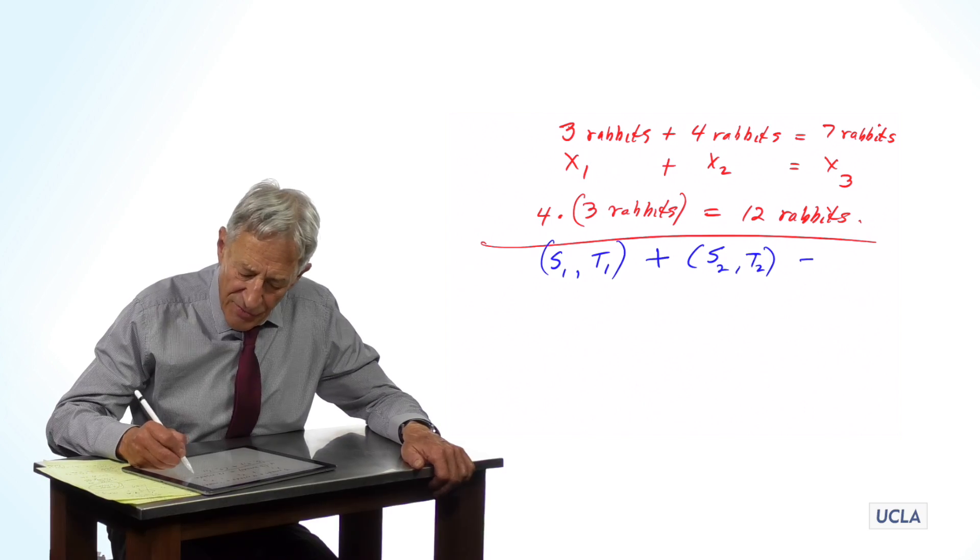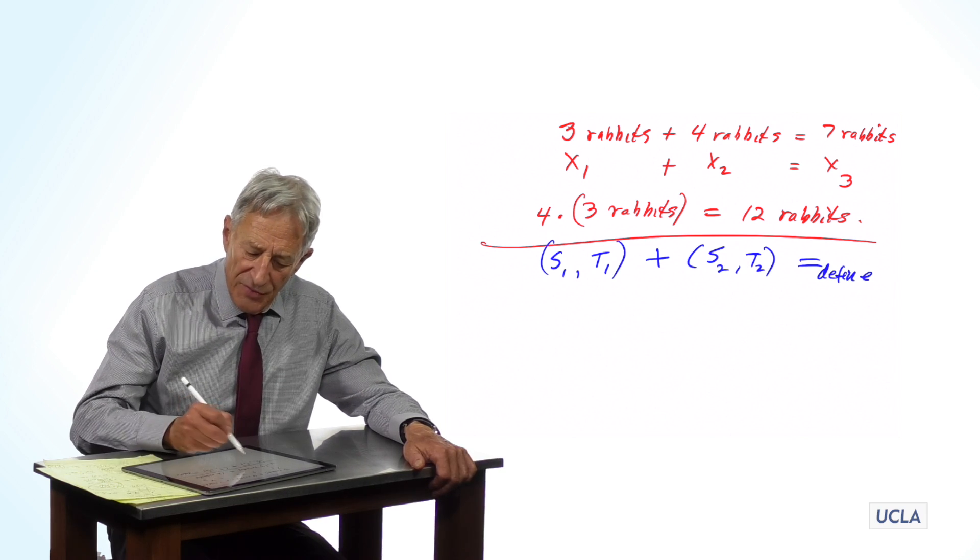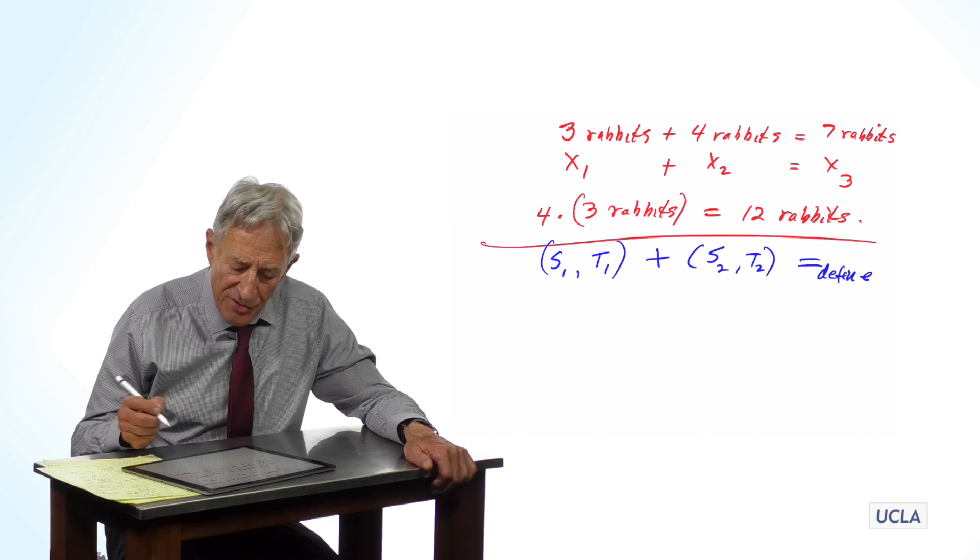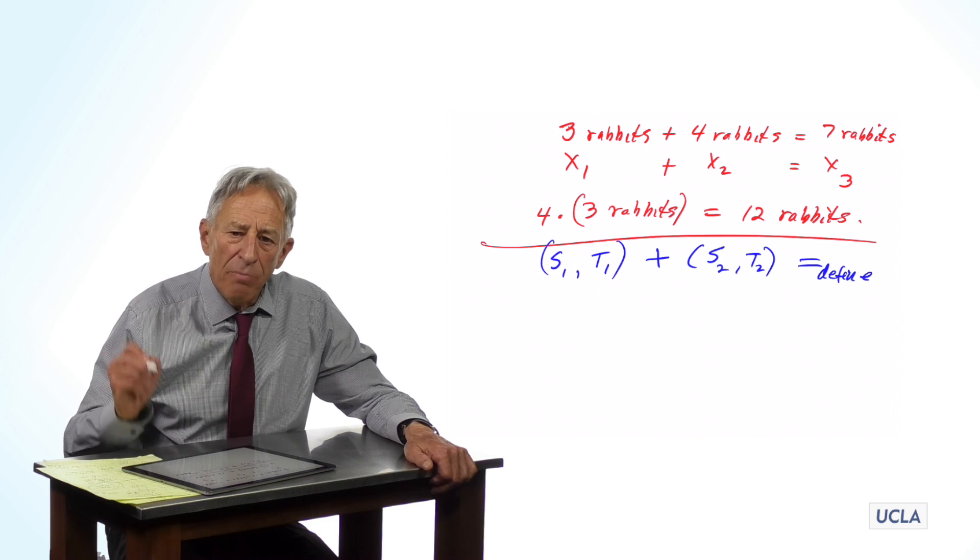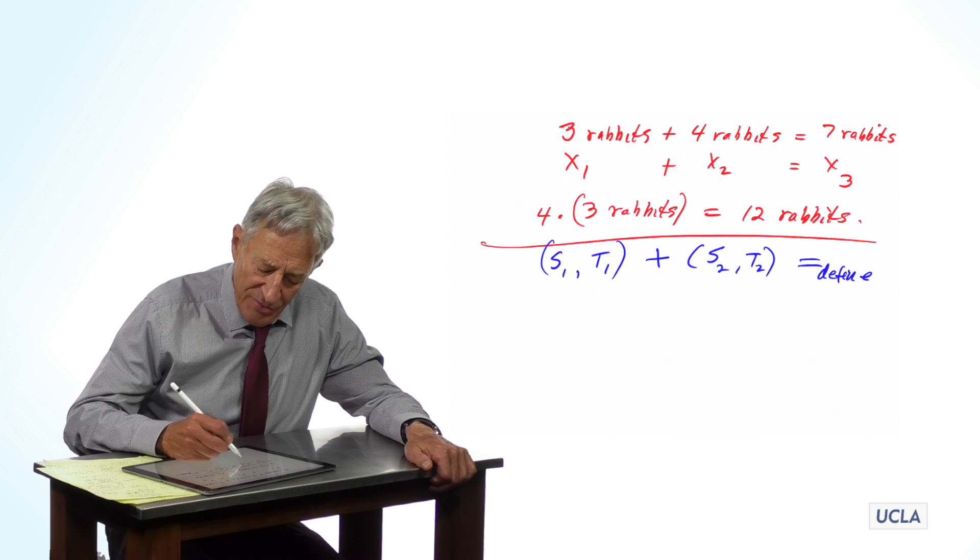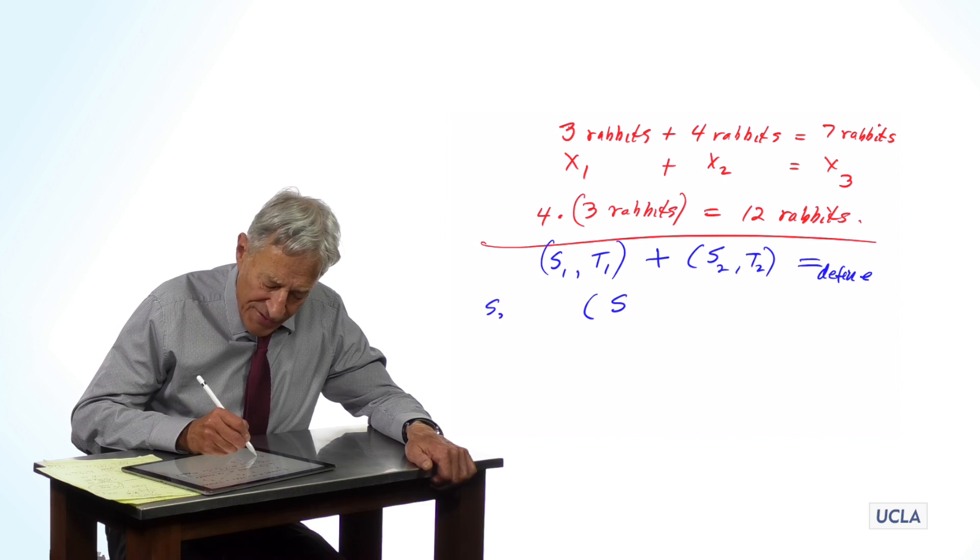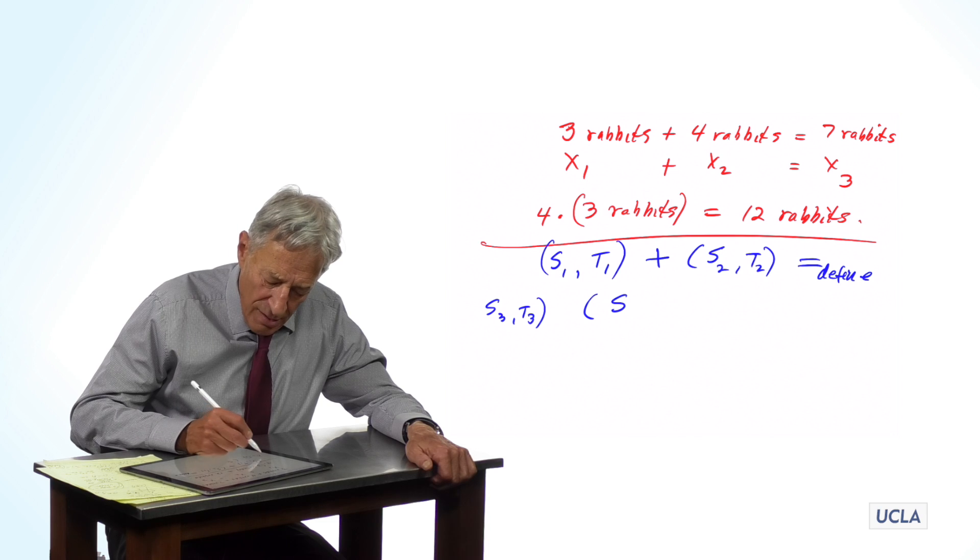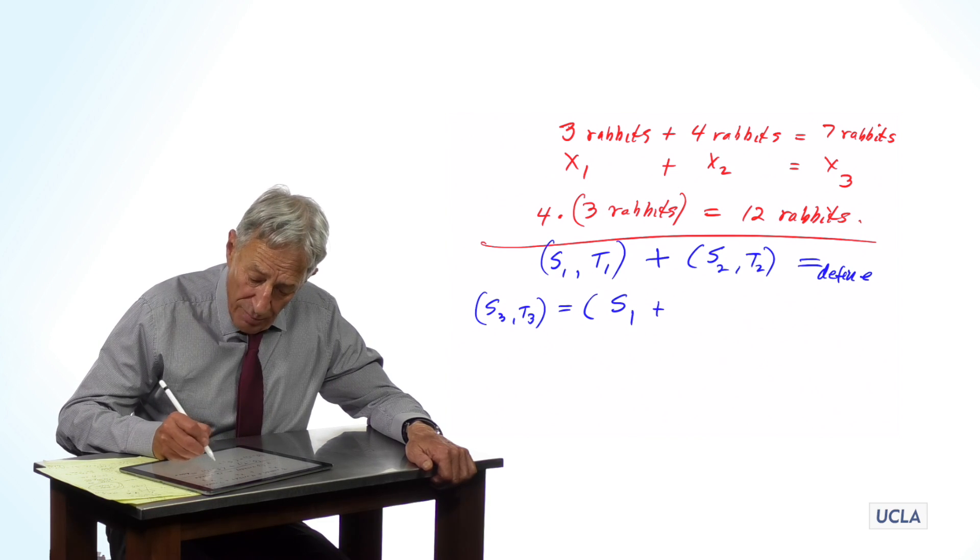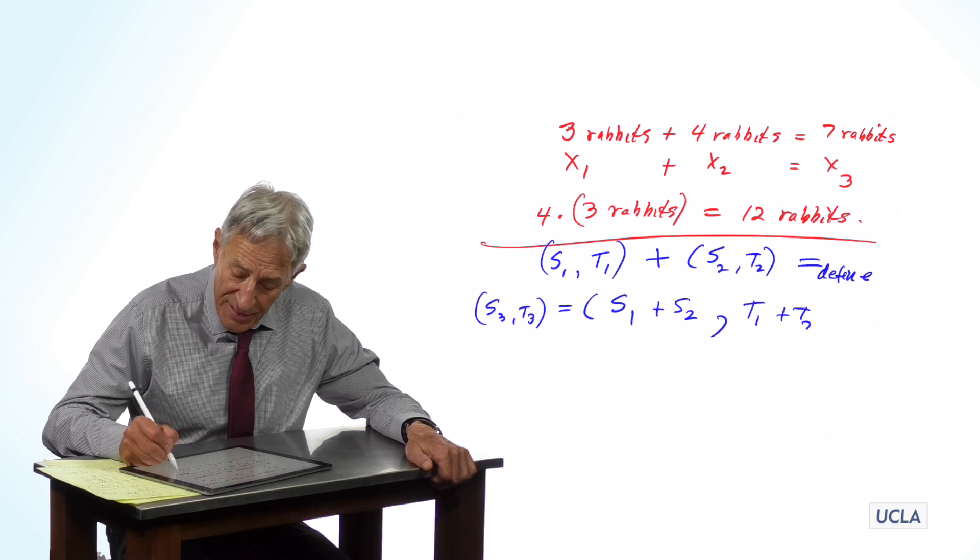There is no automatic answer to this question, but there is an answer. The answer is we define the sum of two vectors by adding them component-wise. So, the sum of S1, T1 and S2, T2 is going to be the new state vector, which I'll call S3, T3. And that's going to be equal to S1 plus S2, T1 plus T2.